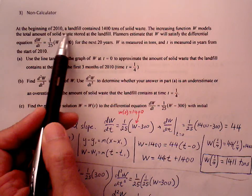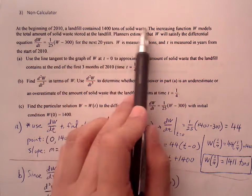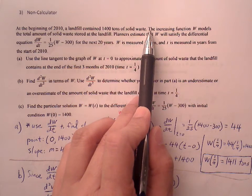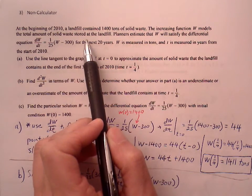At the beginning of 2010, a landfill contained 1,400 tons of solid waste. The increasing function W models the total amount of solid waste stored at the landfill.